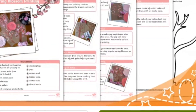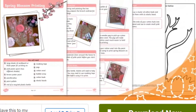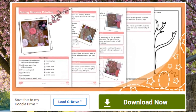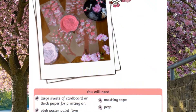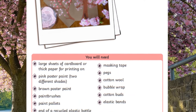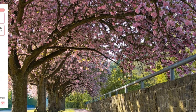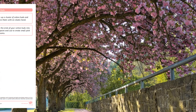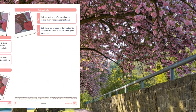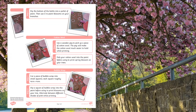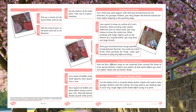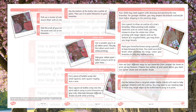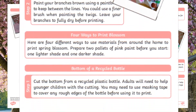Finally, why not make a beautiful blossom display with our Spring Blossom Printing Art Activity. These instructions detail everything you will need to be able to make the craft. It then explains how to create your tree outline and then gives some choice to learners with four different ways they can create their blossom on their picture, including using cotton buds or bubble wrap.